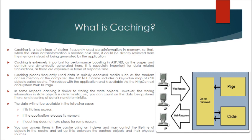Caching places frequently used data in quickly accessed media such as the random access memory of the computer. The ASP.NET runtime includes a key-value map of CLR objects called cache. This resides with the application and is available via the HTTP context and System.Web.UI.Page.